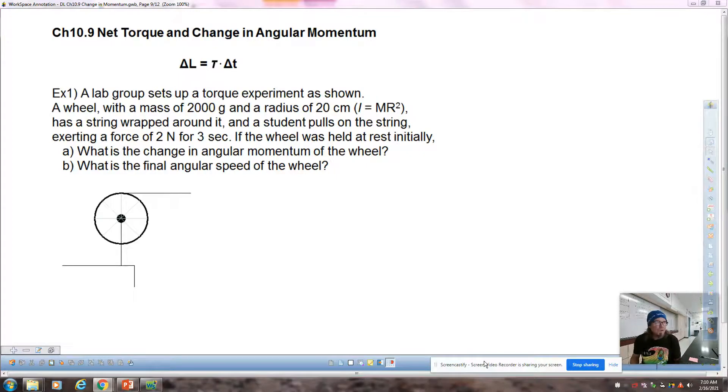Good morning. We are looking at chapter 10.9, looking at change in angular momentum. I hope that you can look at that equation right there and see a correlation, just like we've done with most of chapter 10, to our linear variables. Back in unit 7 through 9, we looked at momentum. With momentum, we said that an impulse, F times t, equals a change in momentum.